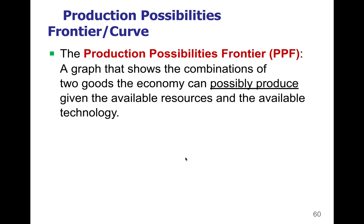Your production possibility frontier is basically a graph that shows a combination of two goods that an economy — either a country or a company — can possibly produce, hence 'production possibilities,' given the resources and technology available.